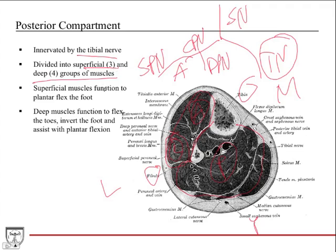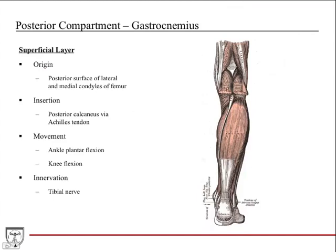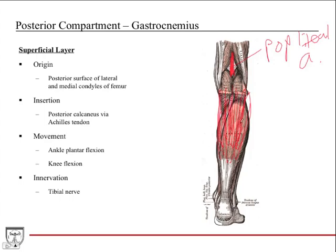The superficial layer has three muscles that function to plantar flex the foot. The deep layer has four muscles that flex the toes, invert the foot, and assist with plantar flexion. The gastrocnemius has two heads — the popliteal artery runs between them. The two heads converge together and share a tendon with the soleus. The gastrocnemius is the most superficial of the three muscles in the superficial layer.